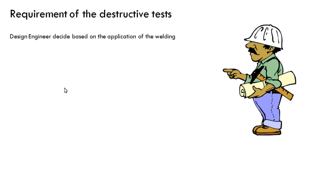Before discussing the various types of destructive tests, let's understand the requirement for destructive testing — why and what is the critical requirement to perform certain destructive tests. Some of the examples are stresses and loading conditions of the weld joint: throughout its service life, what type of stresses and loading conditions will be present. That is one of the considerations.